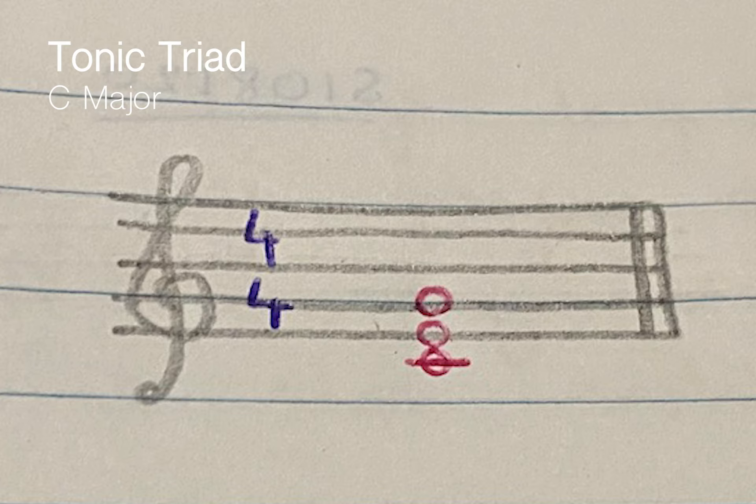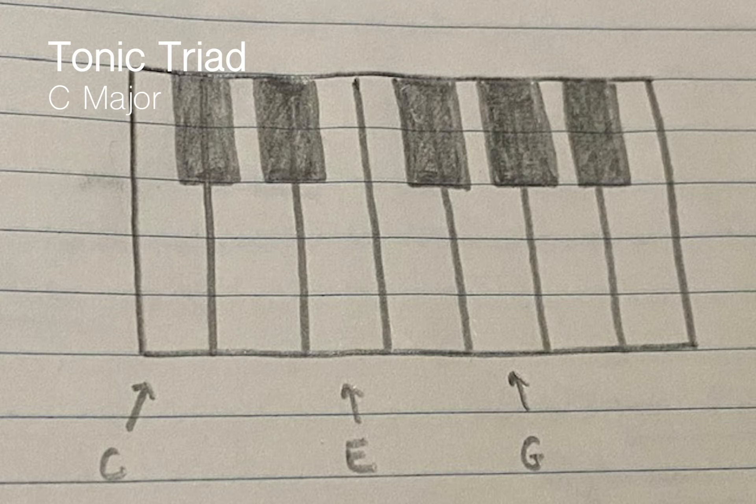Because if we count, the first note is C, you count from C, D is two, three is E, and again count from there, F is four, and G is five. And then we have the tonic triad of the C major key.